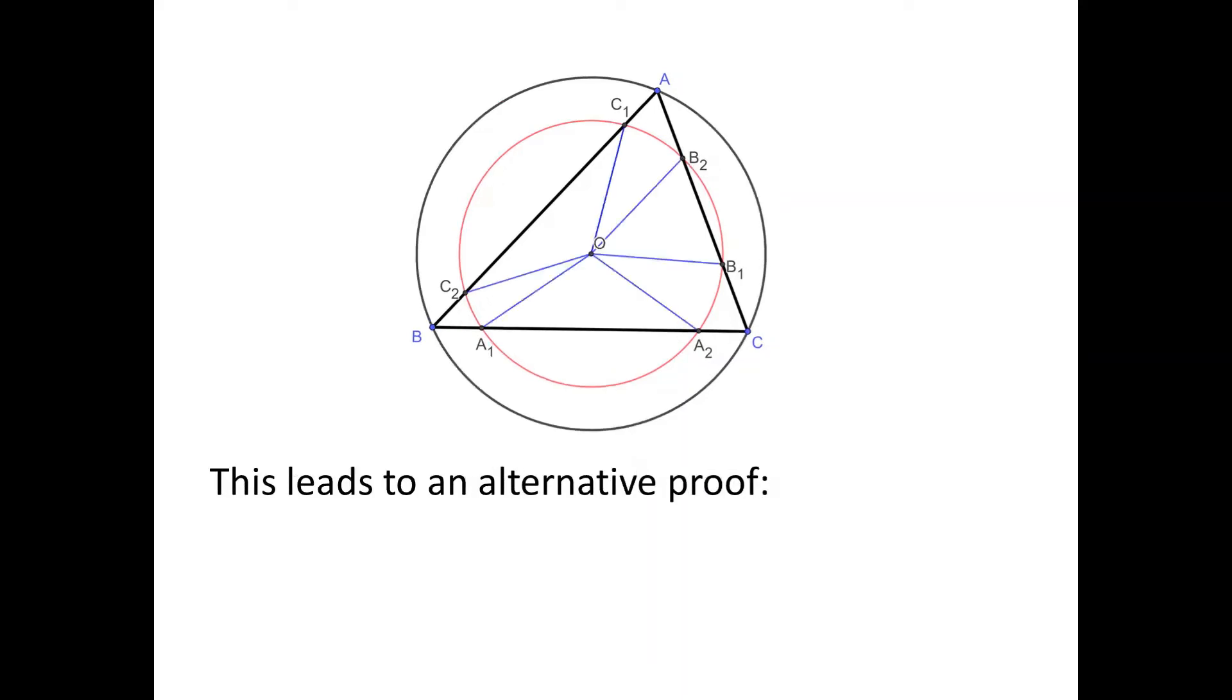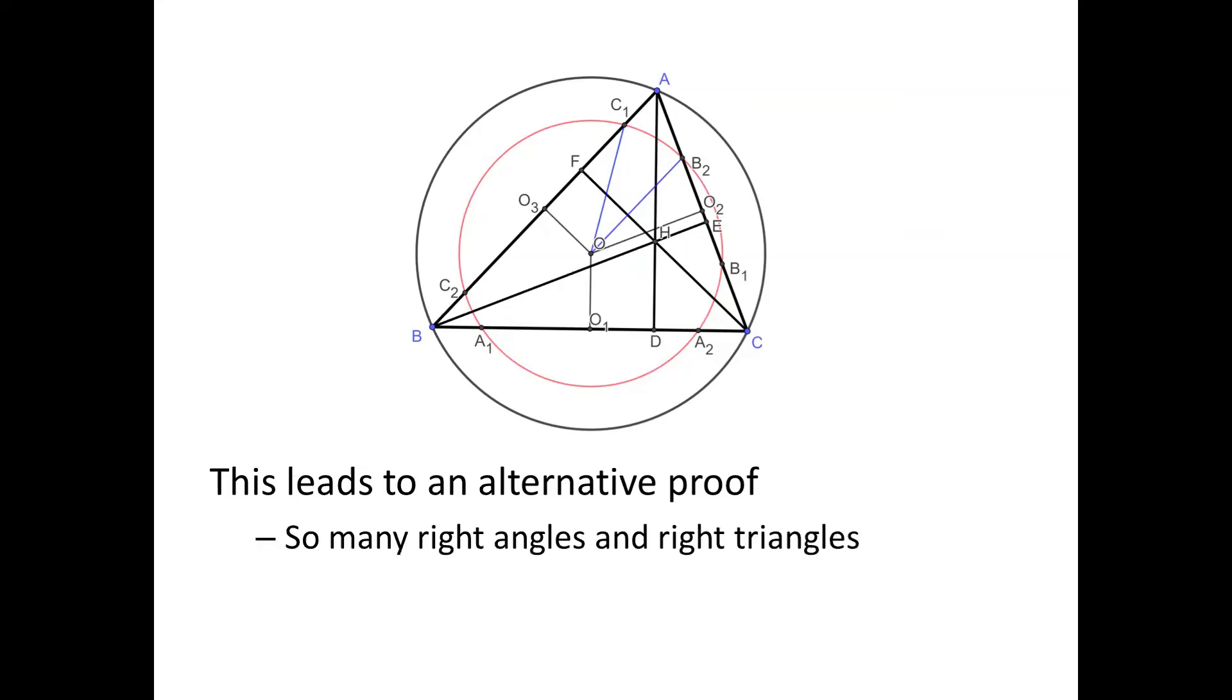This leads to an alternative proof of the problem. We want to prove that distances from O to the 6 points are all the same. Let's put everything back. I will skip the proof, but you can see there are so many right angles and right triangles in the picture. As a result, the key technique for the proof is something everybody knows: the Pythagorean theorem. Thank you for watching.